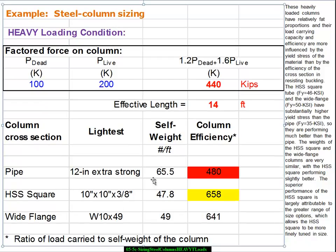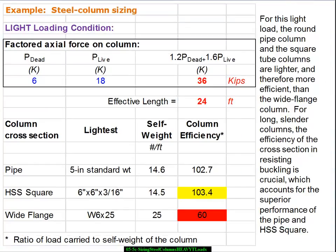On the other hand when we go to the results we got previously for slender columns you'll notice that the best performers are the hollow sections, either the round pipe or the HSS square, and the wide flange is performing relatively poorly because its cross sectional shape is not very well designed for resisting buckling.